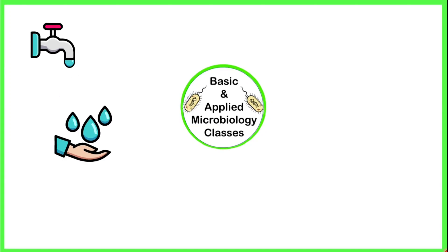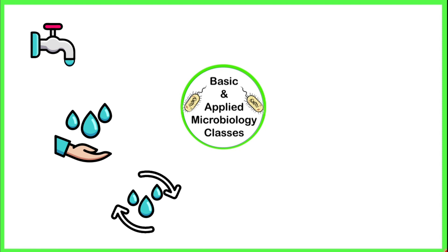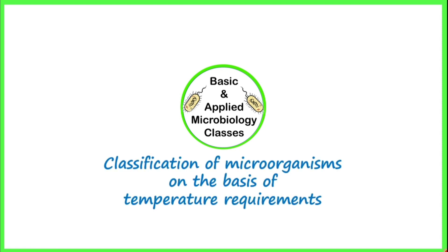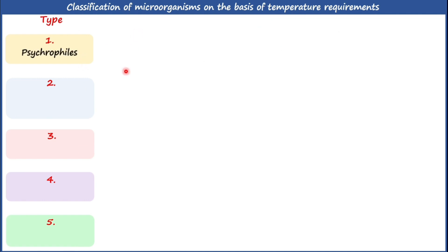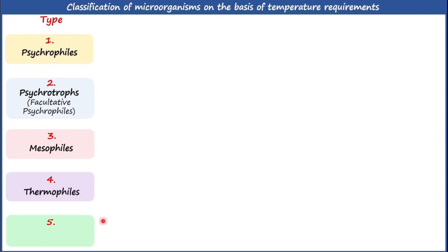In this video we are going to talk about classification of microorganisms on the basis of temperature requirements. We can classify different types of microorganisms as per their temperature requirements into five different types: psychrophiles, psychrotrophs (also called facultative psychrophiles), mesophiles, thermophiles, and hyperthermophiles.